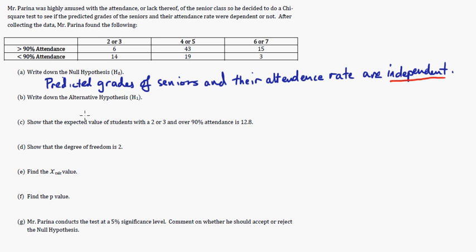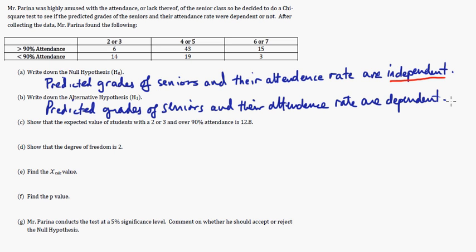The alternative hypothesis, let me just write it down real quick. For the alternative hypothesis, it's going to be: predicted grades of seniors and their attendance are going to be dependent.